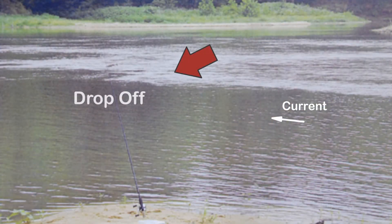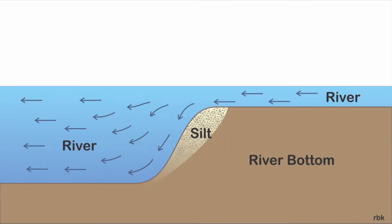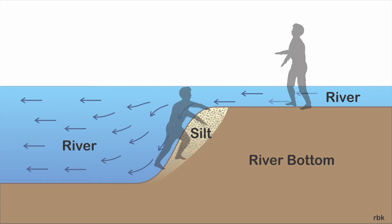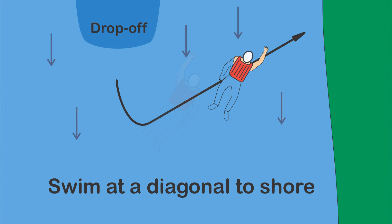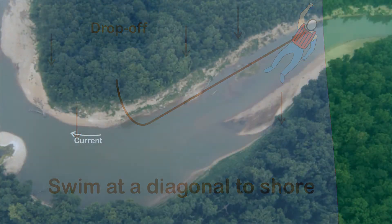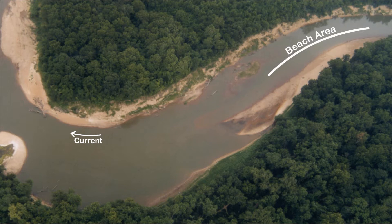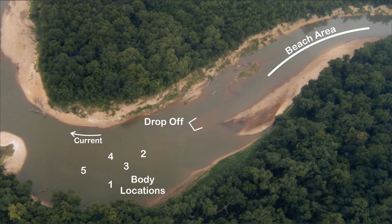Looking downstream, the drop-off looks fairly benign. Compounding the hazard, the drop-off is composed of loose silt and there is still a one to two mile per hour current, making it impossible to climb back upstream. A good swimmer can easily swim on a diagonal to safety. Six inner-city youth on an outing were wading in the beach area. The current slowly moved them downstream, or maybe they were simply exploring the river further downstream. One by one they slipped over the drop-off. Non-swimmers, they panicked. Five drowned and one was resuscitated.